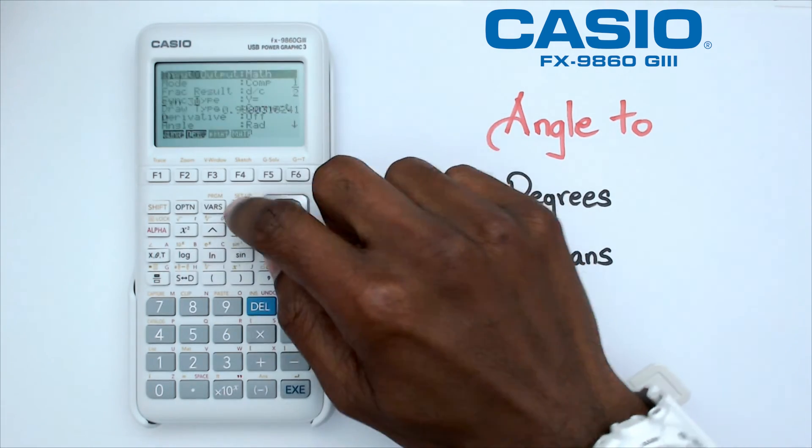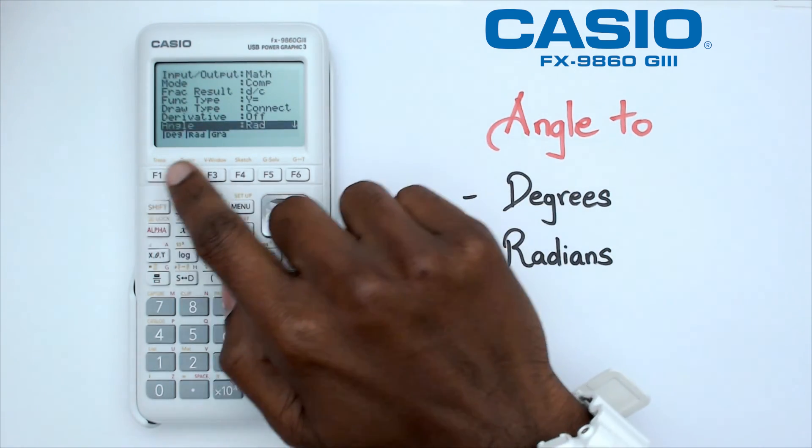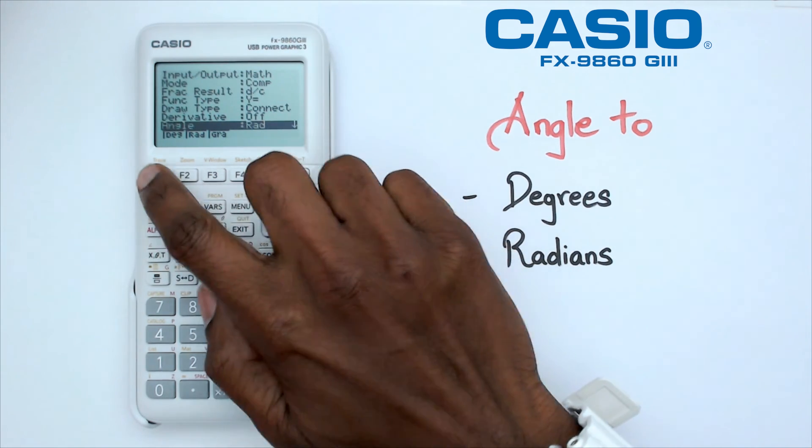So once again, shift setup and just go down to angle, and you've got your degrees and radians options there.